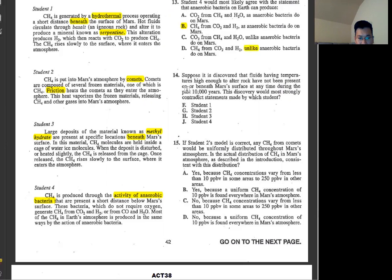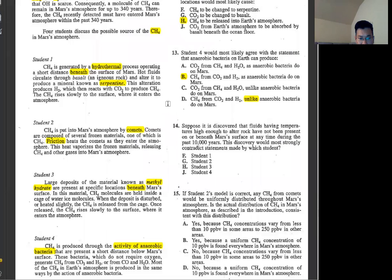Number 14, suppose it's discovered that fluids with temperature high enough to alter rock have not been present on or beneath Mars surface at any time during the last 10,000 years. This discovery would most strongly contradict student one. The rock is only mentioned in student one. It says hot fluid circulates through rock salts and alters it to produce mineral known as serpentine. That's the only part we see related to rock itself.